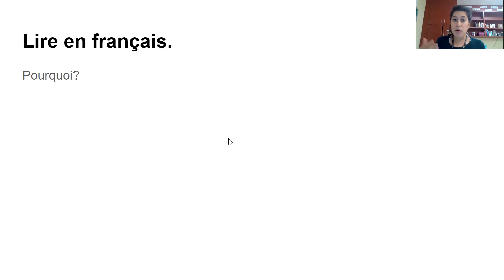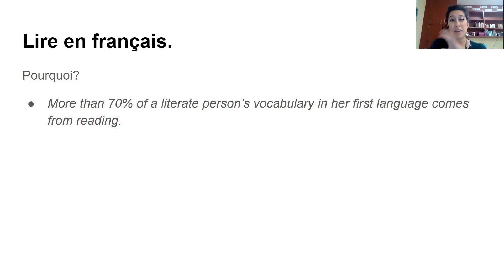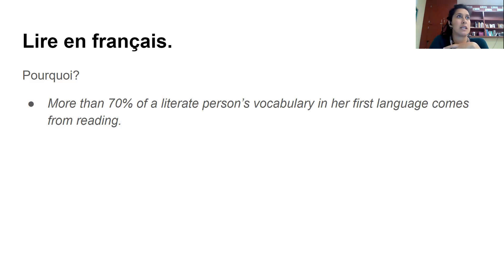So the first question is pourquoi — pourquoi lire en français? Pourquoi means why. So why read in French? Studies have shown that more than 70% of a literate person's vocabulary in their first language comes from reading. A literate person is somebody that can read and write, and more than 70% of your vocabulary — the number of words you have in your first language — comes from reading. It doesn't come from listening or watching TV or any of those other things. It comes from reading. That is how powerful reading can be.